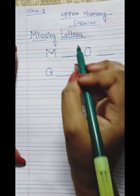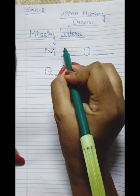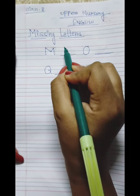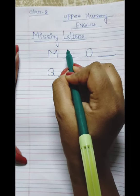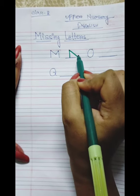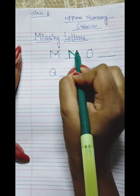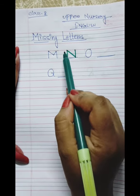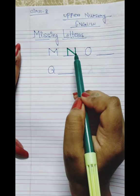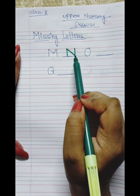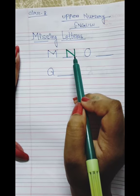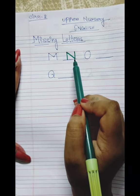Yes children, N comes next. Let us see how to write N. From up, drag the line towards down — a straight line. Then a slanting line, and take the line upward. I made N. So tell me, N is the example of which line? N is the example of a slanting line.